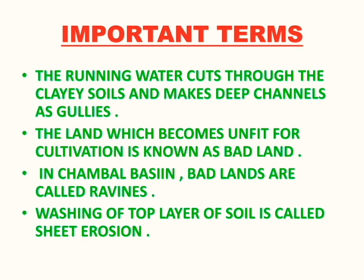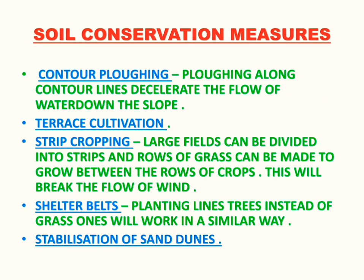The land which becomes unfit for cultivation is known as bad land. In the Chambal basin, bad lands are called ravines. Washing of the top layer of soil is called sheet erosion. These are important terms to memorize for one-mark questions in your paper.